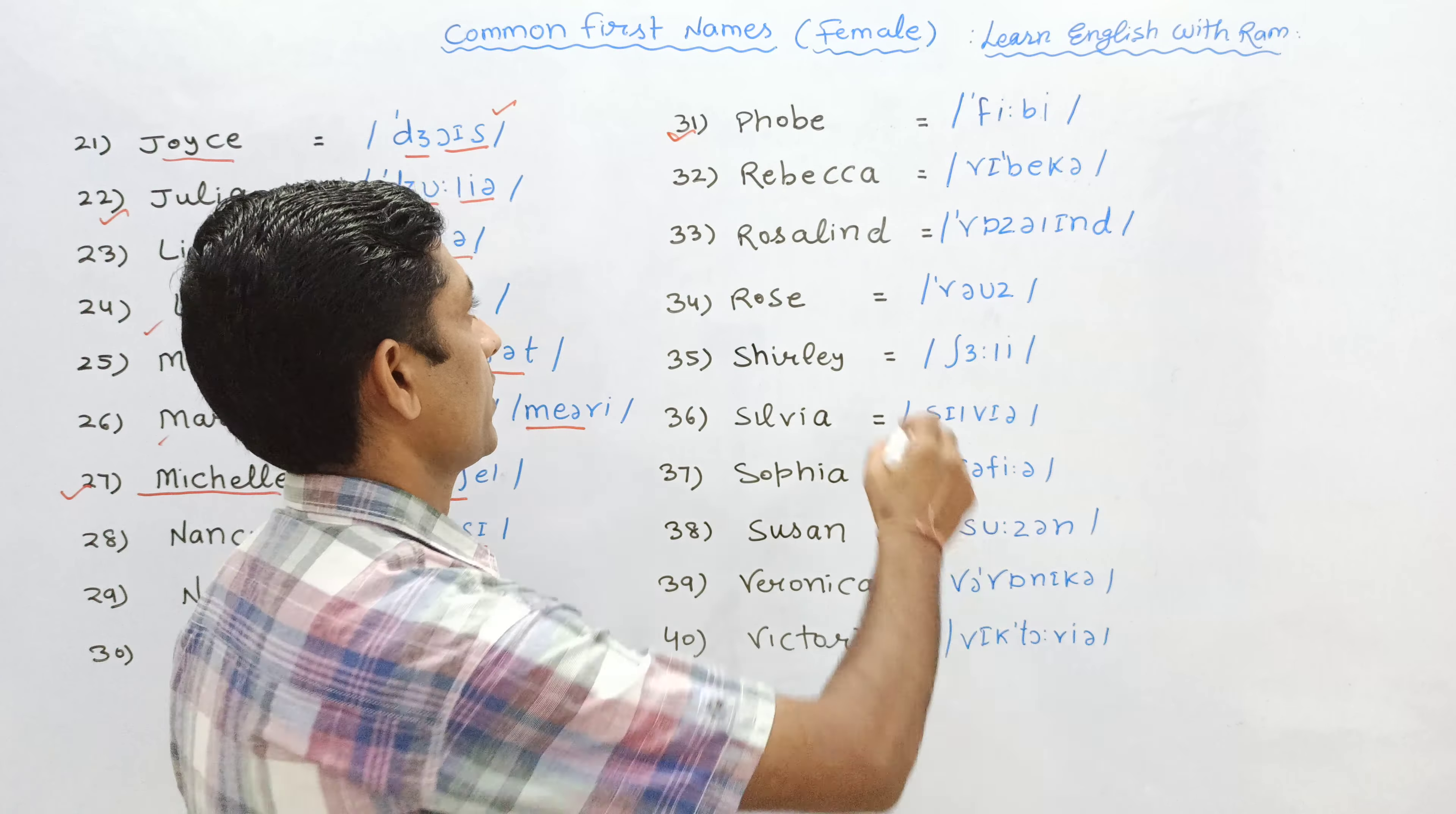32nd is Rebecca, stress is on the second syllable. Next one is Rosalind. Another one is Rose.